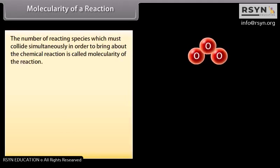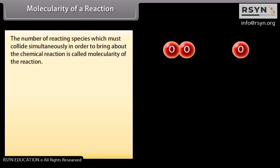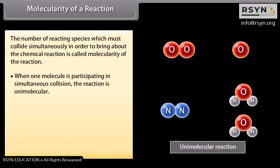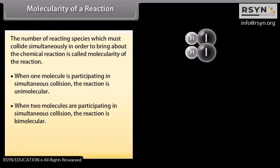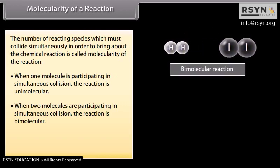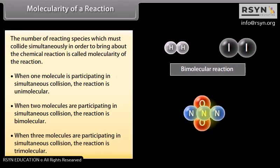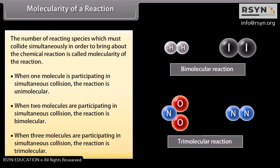Molecularity of a reaction is the number of reacting species which must collide simultaneously in order to bring about the chemical reaction. When one molecule participates, the reaction is unimolecular; when two molecules participate, it is bimolecular; when three molecules participate, it is trimolecular. Molecularity of a reaction is always a whole number.